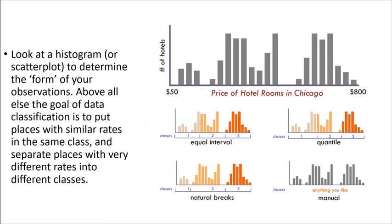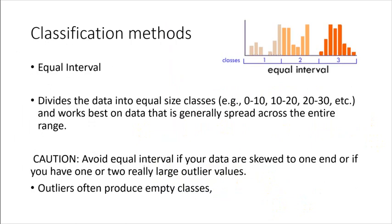Okay, here's an example. Price of hotel rooms in Chicago, and a histogram, right? And then what I want to show you are the different ways that we could break that up, the different ways we could classify it. And if we could be in class together, we'd run through exercises where you guys take your own data and experiment with this a little bit and do it manually. So an equal interval is going to divide the data into equal class sizes, so nice clean breaks in your legend. That looks lovely, but this really only works with data that's fairly evenly spread across the range. So a histogram that's just very consistent, doesn't have a major peak, no major outliers. If you have data that's skewed, you don't want to use equal interval because you're going to produce empty classes, and that's silly.